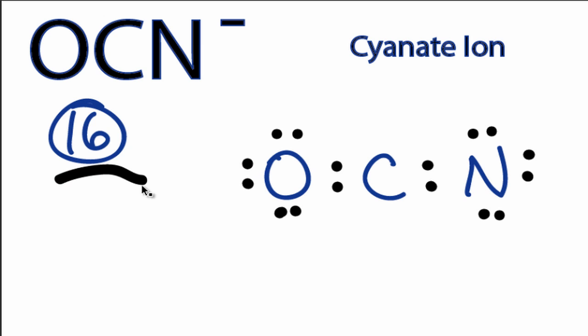We've used all our valence electrons at this point. Oxygen and nitrogen have 8 valence electrons, so they're good, but the carbon only has 4.